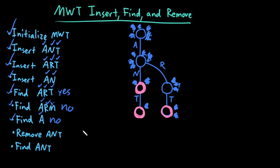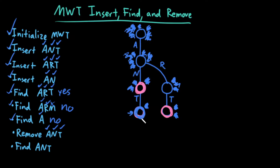Now for the last algorithm: remove. Remove is extremely simple — it's the exact same thing as the find algorithm, except the moment we get to the last node in our traversal, just make that node not be a word node. Let's try to remove the word ANT. I start at the root, start at the first letter. Does the current node have a child edge labeled by the current letter? Yes, it does. So I traverse down. Does the current node have a child edge labeled by the current letter? Yes, it does. Traverse down. I finished the word, which means whatever node I'm currently at, I have to make it not be a word node anymore. And finished — I have successfully removed the word ANT from my multi-way trie.